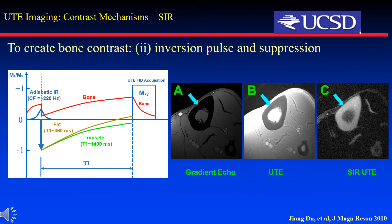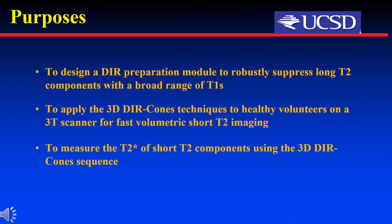Single inversion recovery prepared UTE sequence is more efficient to suppress long T2 tissues. Long T2 tissues are inverted and partially nulled when data acquisition occurs around the signal nulling point. In comparison, short T2 components are saturated after the IR pulse and recover immediately, so high short T2 contrast can be obtained. However, this technique is hard to fully suppress long T2 tissues with two or more T1 values. Our purpose in this study is to design a DIR preparation module to robustly suppress long T2 components with a broad range of T1s, and to apply the 3D DIR-UTE-CONES technique to healthy volunteers on a 3T scanner for fast volumetric short T2 imaging, and to measure the T2* of short T2 components using the 3D DIR-UTE-CONES sequence.